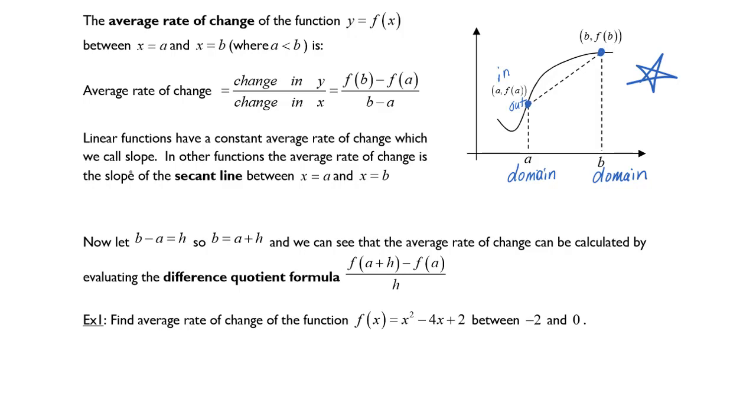Now let b minus a equal h. If you solve this statement b minus a equals h for b, you get b is equal to a plus h, and we can see that the average rate of change can be calculated by evaluating the difference quotient formula. We've already used the difference quotient in a previous assignment, however now we are connecting it to what it actually represents, which is the rate of change between two points to give a generic slope.